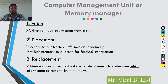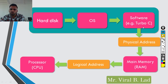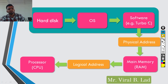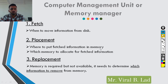Next operation is placement. Placement decides where to put the fetched information in main memory. For example, when you run Turbo C and its information needs to be loaded into memory, placement decides where exactly in main memory to store that information — which specific location to use.